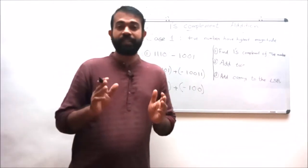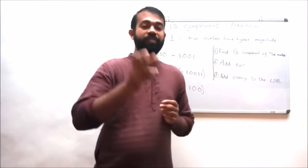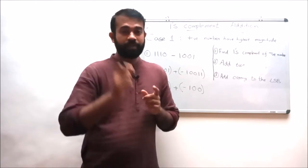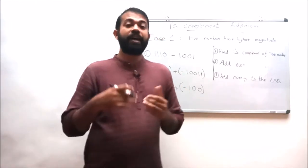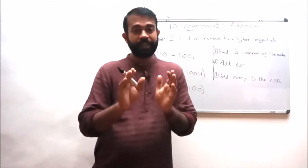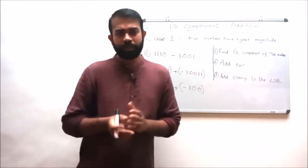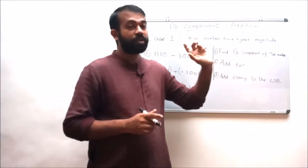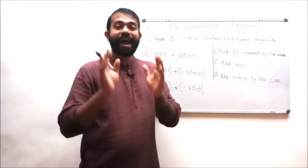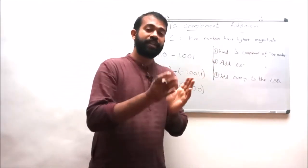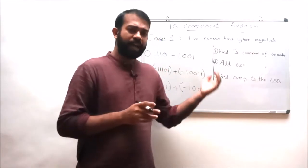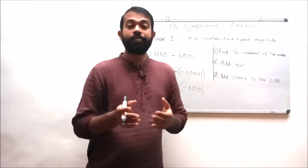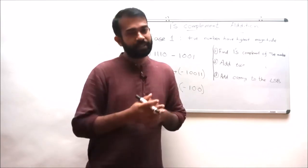In this lecture we discussed how to add two different numbers using the ones complement addition method. Case 1 is when the positive number has the highest magnitude and the negative number has the least magnitude. There are three rules: rule one — find the ones complement of the negative number; rule two — add the ones complement of the negative with the positive number; rule three — there will arise a round-around carry that should be added with the LSB, which gives the final result.